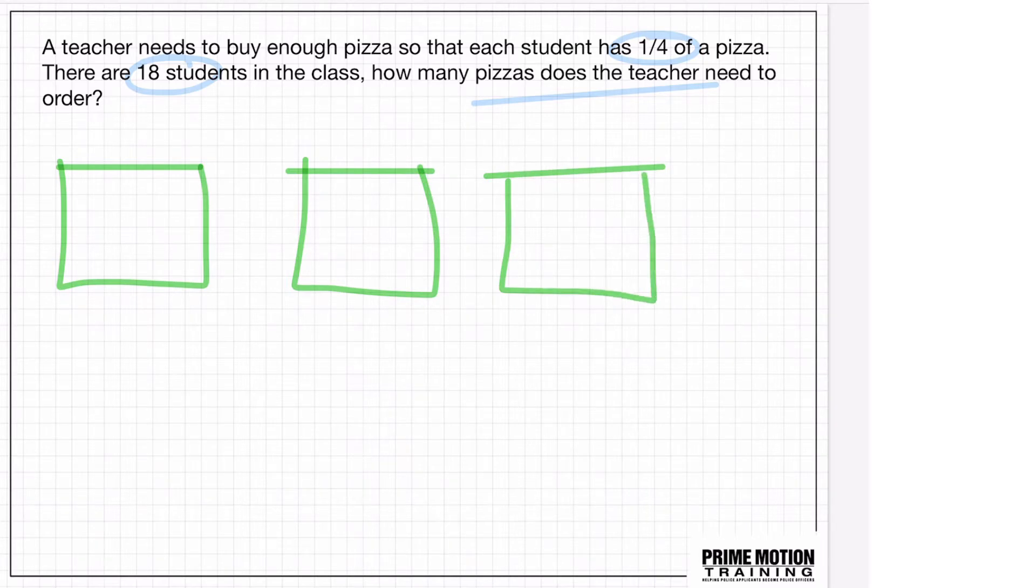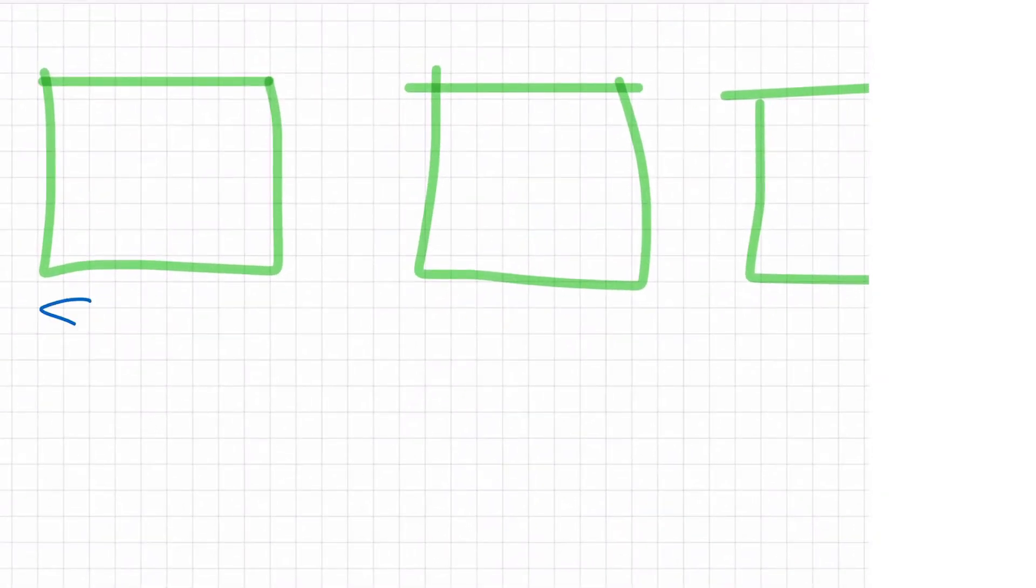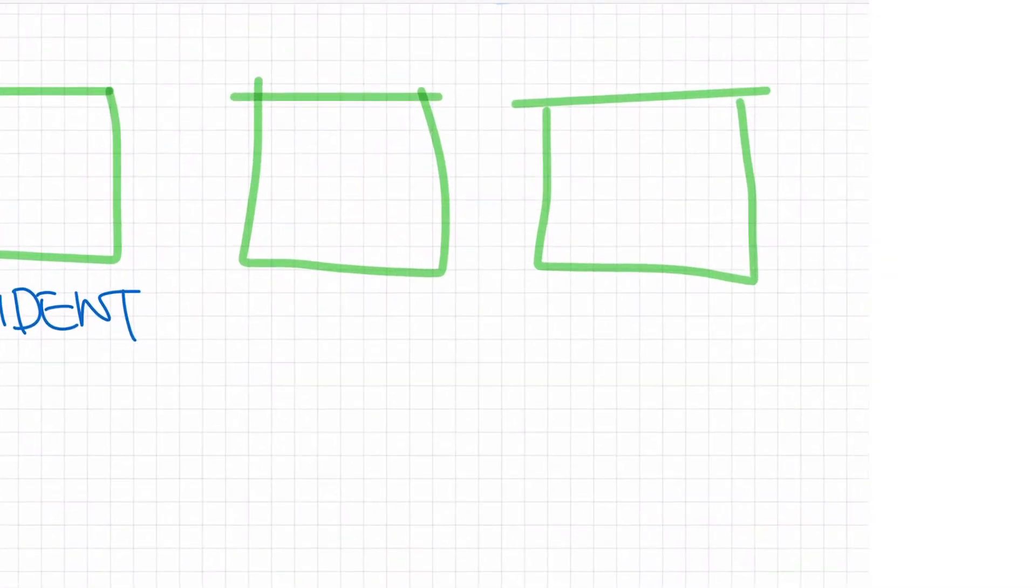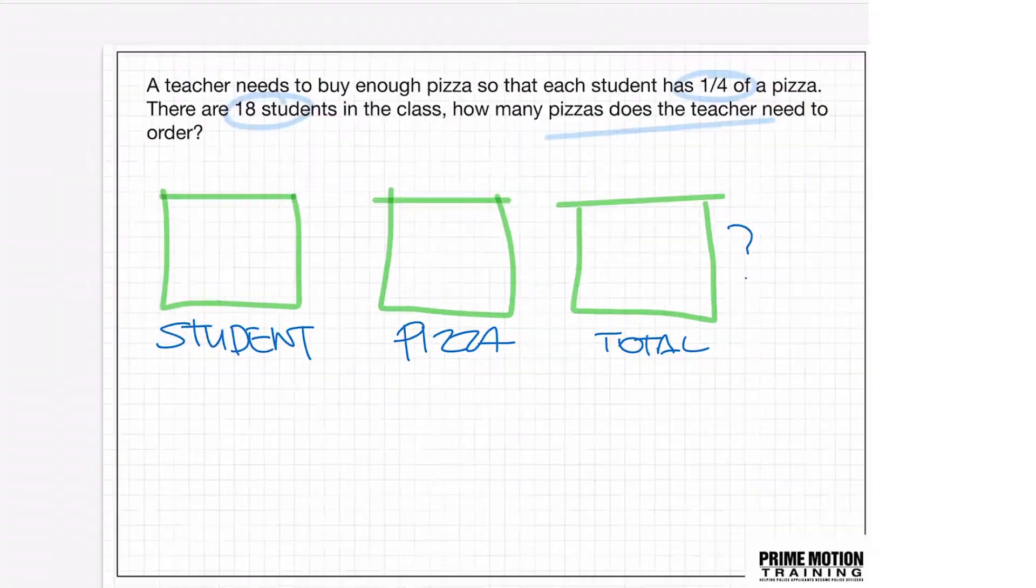There are three basic components to any of these types of questions. And in this example, the first is the students. Now this could be anything. This could be boxes, this could be houses, this could be groups, it could be whatever. So there are students and in this case we're looking at pizza. So each student needs an amount of pizza. And then that gives us the total amount that we need to order. And this is the part that we don't know. We don't know the total that we need to order.